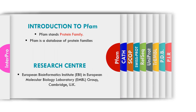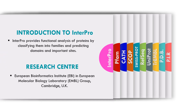The next protein database is InterPro. InterPro provides a functional analysis of proteins by classifying them into families, domains, and important sites. It gives functional analysis of proteins on the basis of their domains and very important sites present on the proteins. The research center of InterPro is EBI in Europe and the EMBL group in the UK. All these databases are also called protein information resources because we get information about proteins from them.